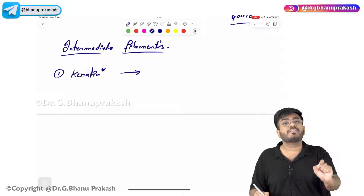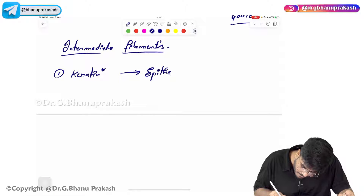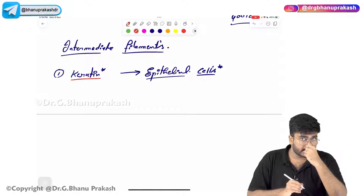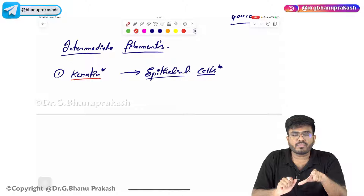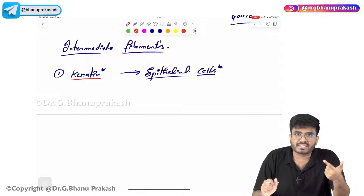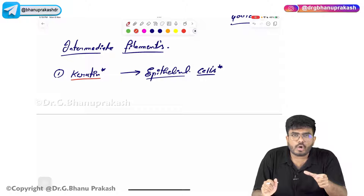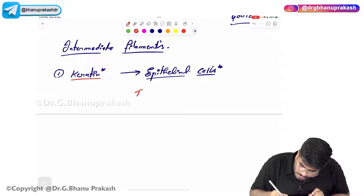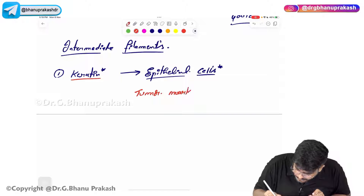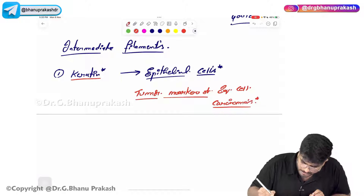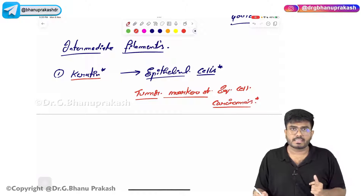Keratin is present only in epithelial cells. Carcinomas are cancers arising from epithelial cells, so carcinomas will definitely have keratin filaments. Keratin is a tumour marker of squamous cell carcinomas — you will see keratin pearls inside those cancerous cells.